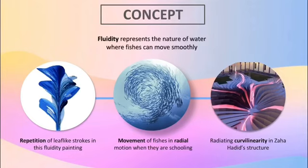Next is the suggested concept which is fluidity. This idea represents the nature of water where fishes can swim freely and smoothly. These are some examples of things that apply fluidity. The first example is a fluidity painting which shows repetition of leaf-like strokes. The next example is the fluid movement of fishes in radial motion when they are schooling. The third example is one of Zaha Hadid's known sculptures that shows fluidity through radiating curvilinearity.